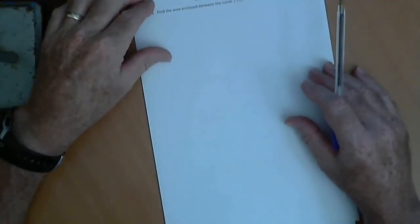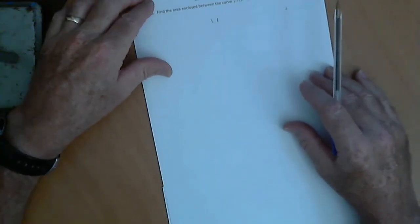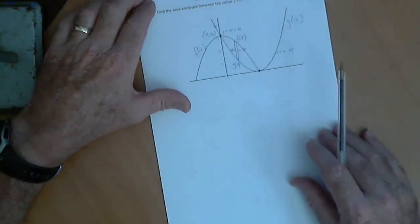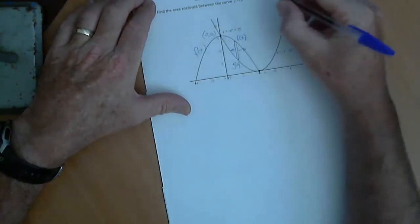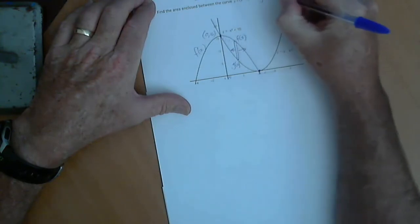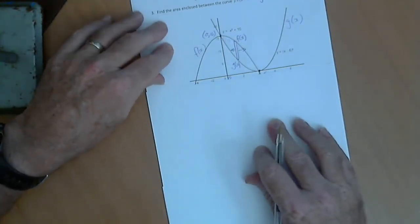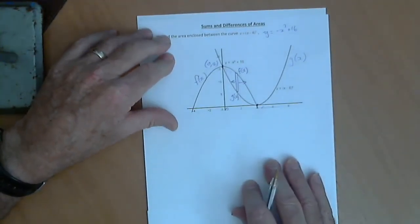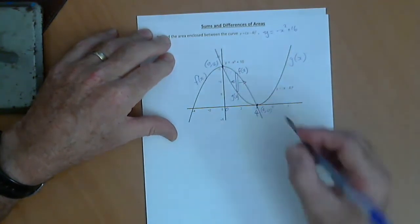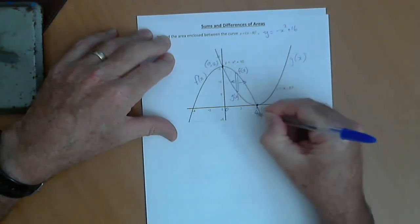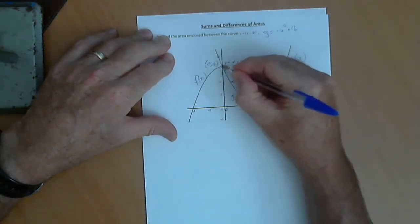The next type of question is where we find the area enclosed between two curves. In this case, we've got y equals x minus 4 squared, which is that curve, and y equals minus x squared plus 16. Okay, so in this case, you're given a nice graph. Points of intersection are 4 and 0.